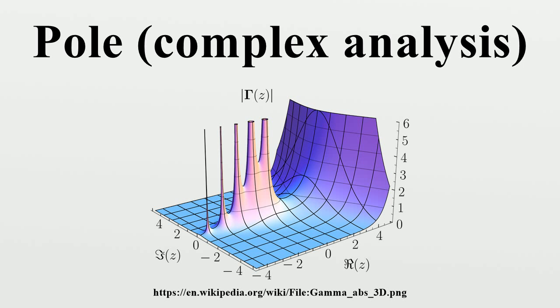So the point p is a pole of order n of f if and only if all the terms in the Laurent series expansion of f around p below degree minus n vanish and the term in degree minus n is not zero.